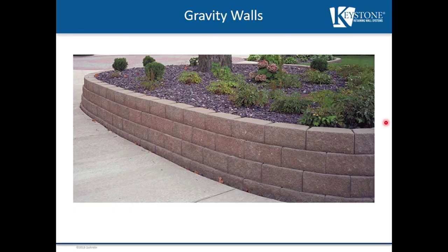A gravity wall relies solely on its own self-weight and block setback to resist the soil loads behind the wall. When the self-weight of the block is exceeded by the soil load, the block weight needs to increase or the soil must be reinforced, creating a soil-reinforced gravity wall.